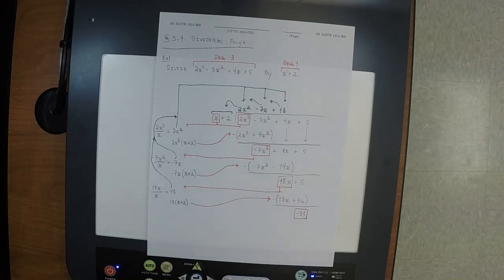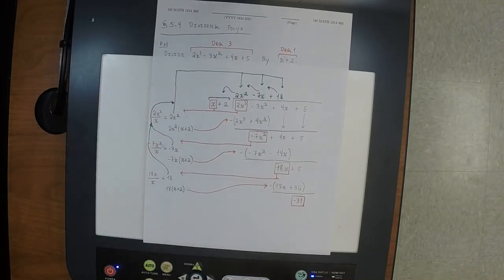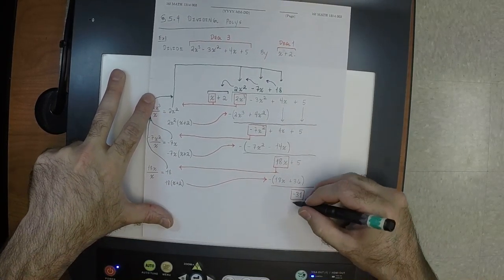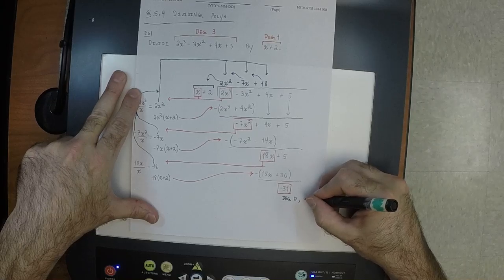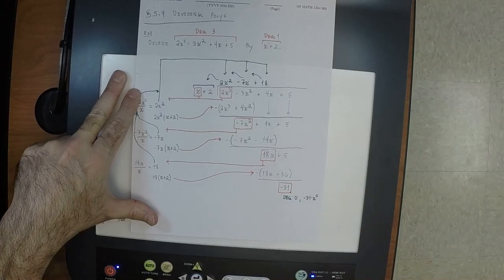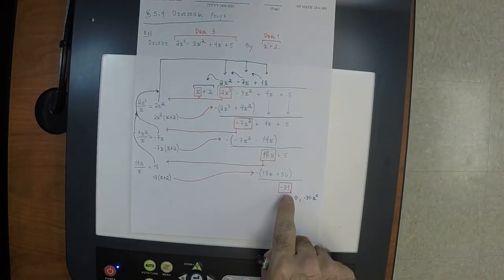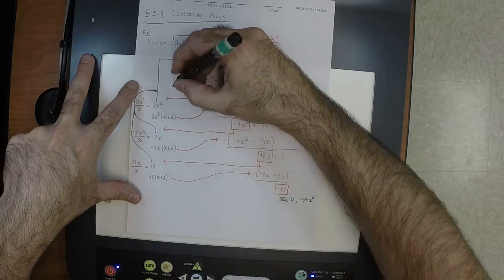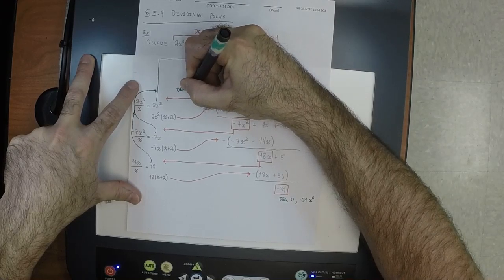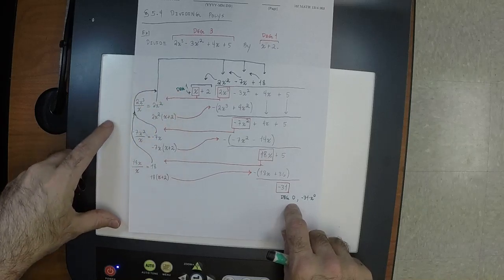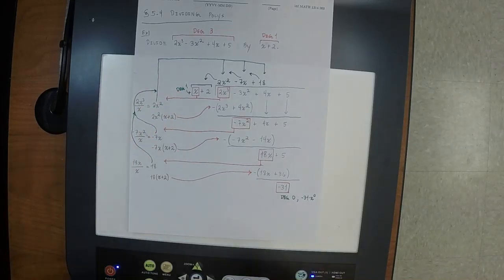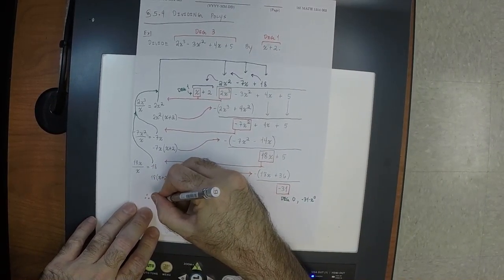The leading term inside is −31, which as a polynomial is degree 0. The divisor is degree 1. Since the degree inside is less than the degree outside, x cannot come in — we're finished. The quotient is 2x² − 7x + 18 and the remainder is −31.